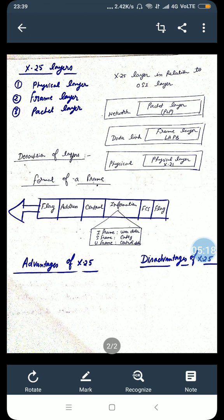The frames here are categorized like I-frame, S-frame and U-frame in the part of information. I-frames are used to encapsulate PLP packets from the network layer. S-frames are for flow and error control in the frame layer.